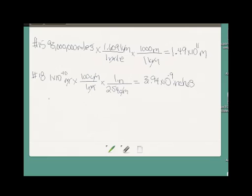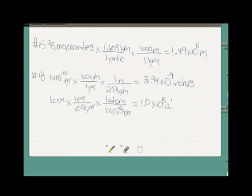And that gave me 3.94 times 10 to the negative 9th inches. Now, the B part says if I've got a line that's 1 centimeter long, how many atoms are along that line? Well, 1 centimeter, I know in 1 meter there are 100 centimeters. And I know that 1 atom is 1 times 10 to the negative 8th meters wide. Multiplied that all out, and I got there are 1 times 10 to the 8th atoms along that 1 centimeter line. And that's 18.